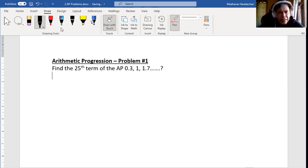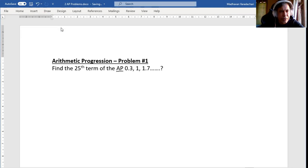Here they specifically said it is an arithmetic progression. Even if they don't say that in the question, we can verify whether it is an AP or not. If there is a common difference, then it is an arithmetic progression. How do we do it?